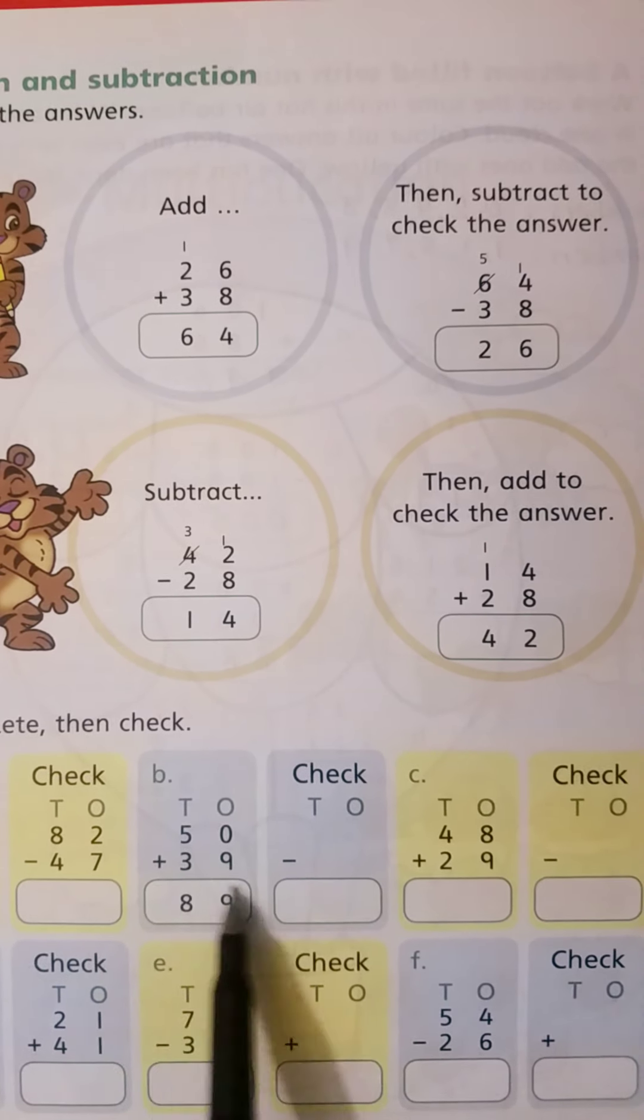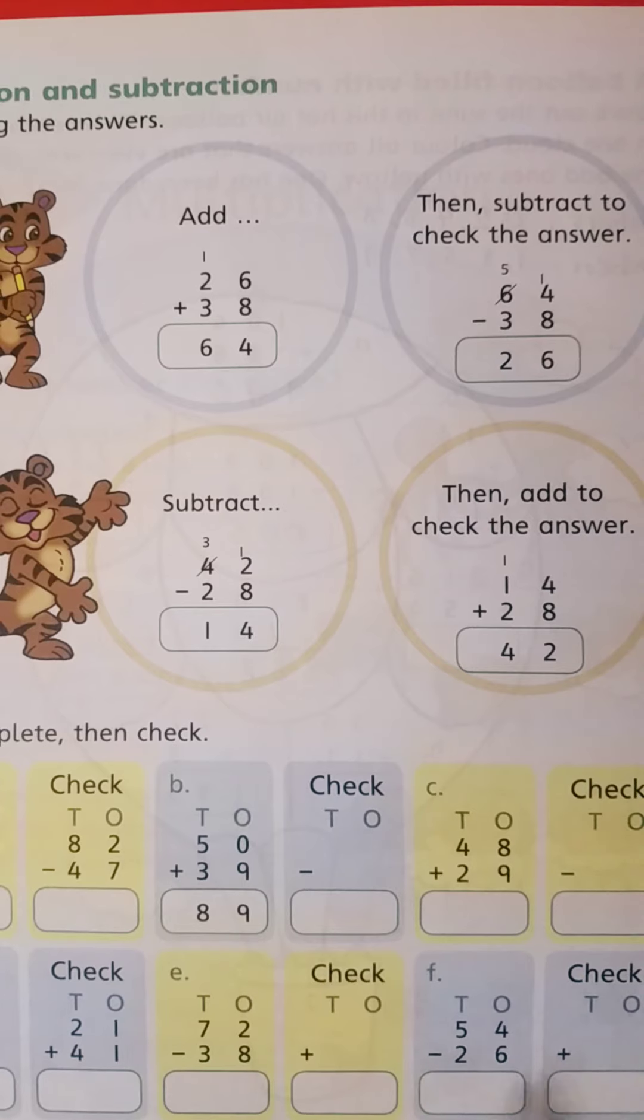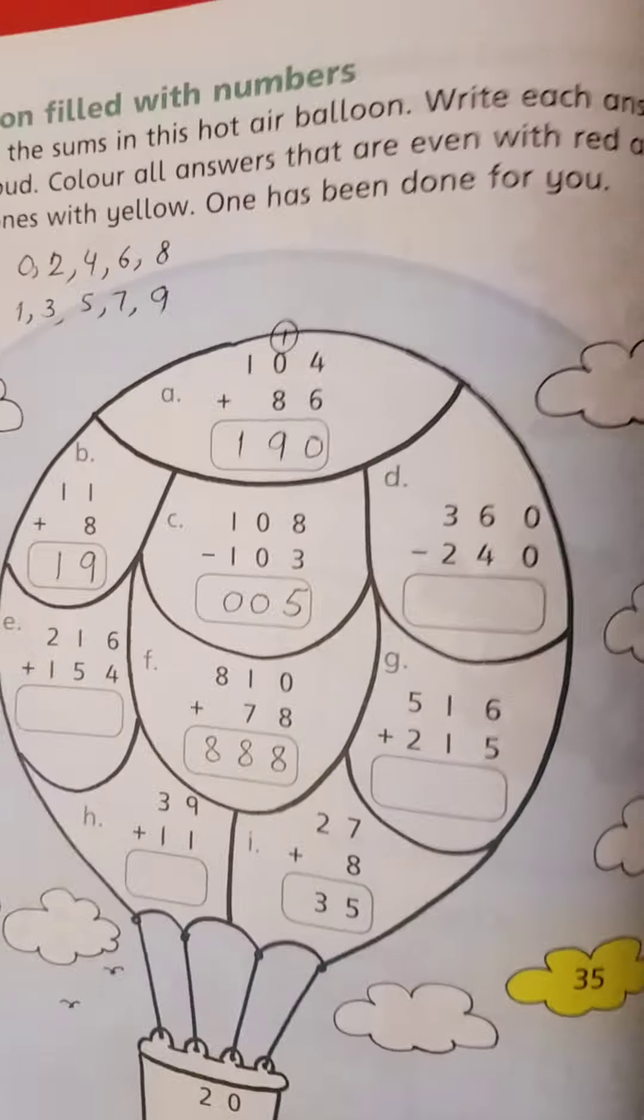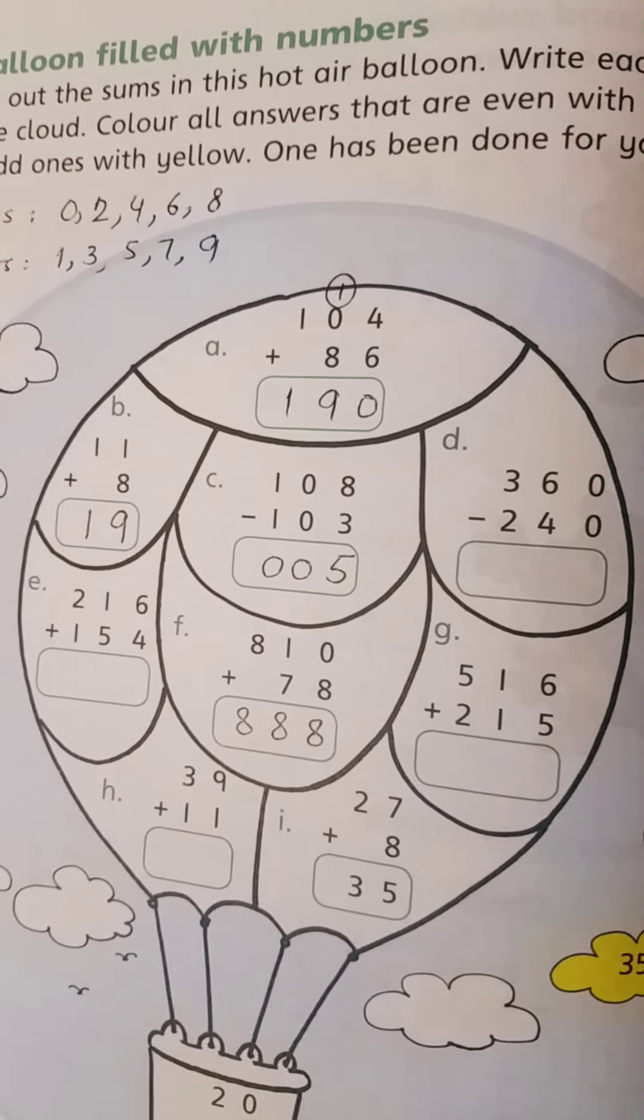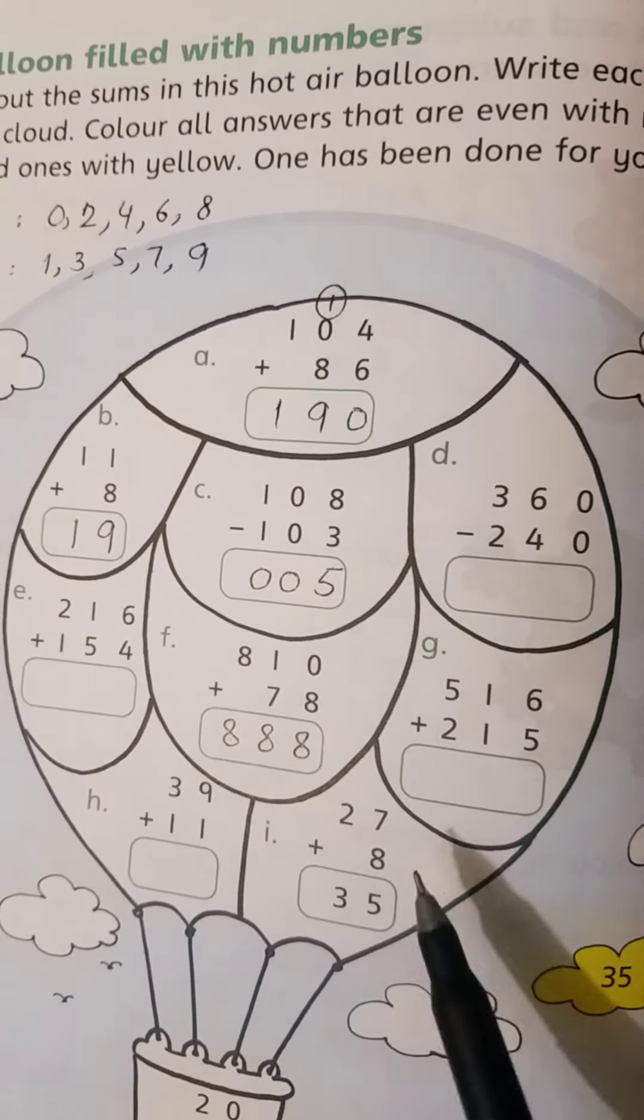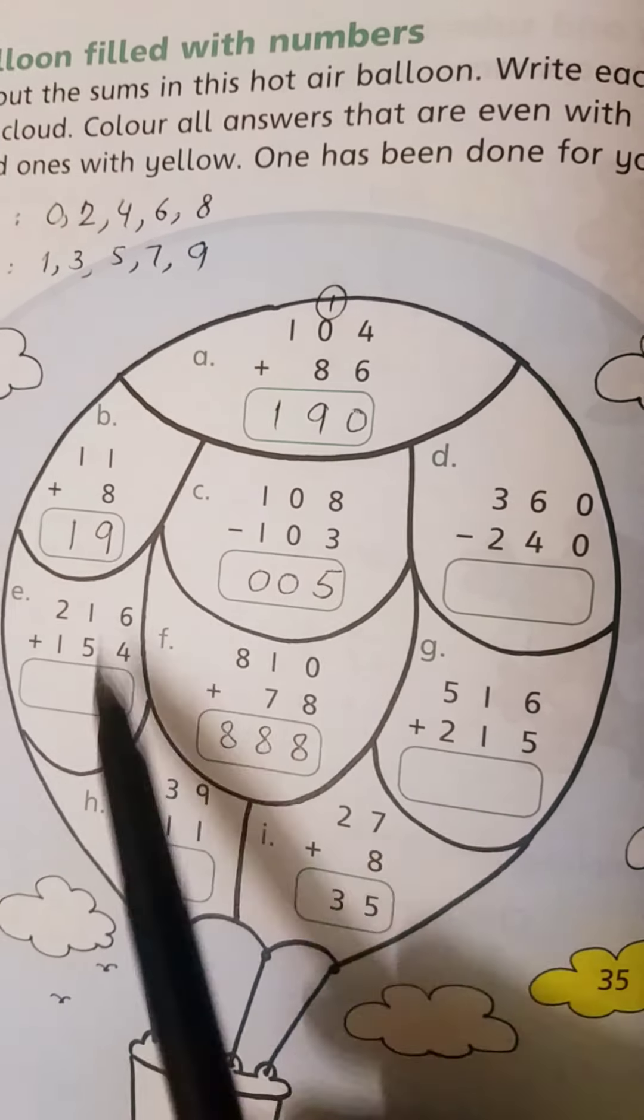So checking is easy. Complete page number 51. Next is a balloon filled with numbers. Now there are different addition and subtraction questions. We have to solve these questions.